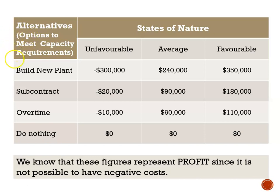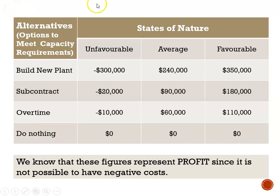The options are: one, they can build a new plant; two, they can subcontract; three, they can do overtime; and four, they can choose to do nothing. So these represent our decision alternatives — the different choices that we can make going forward.